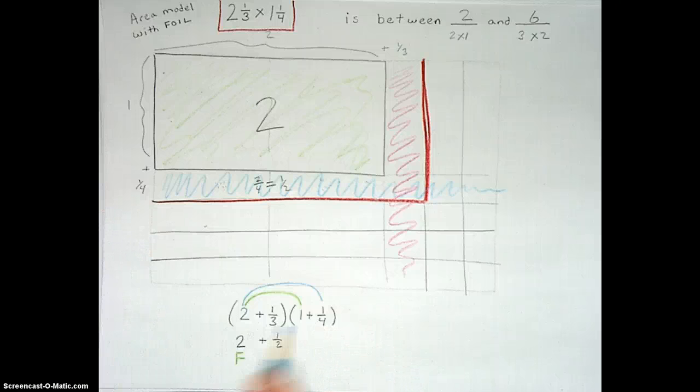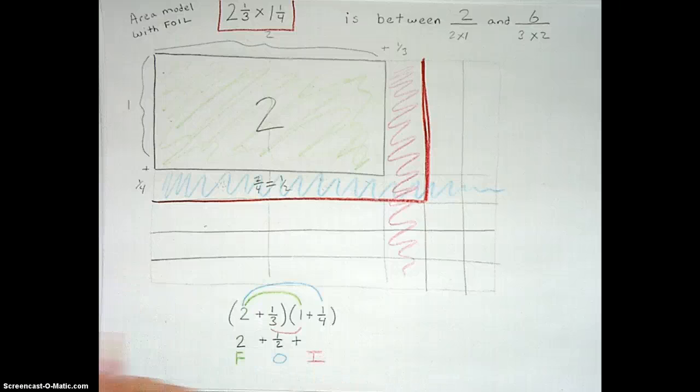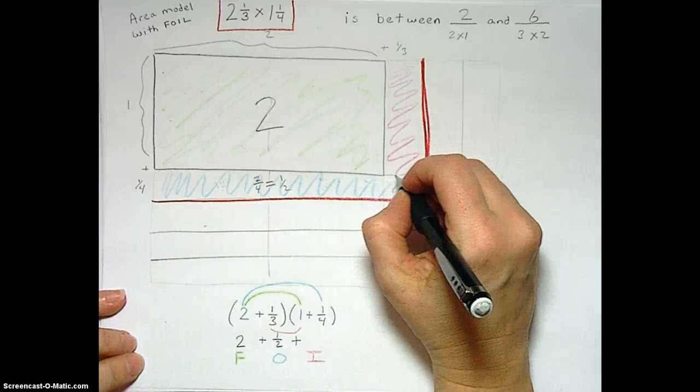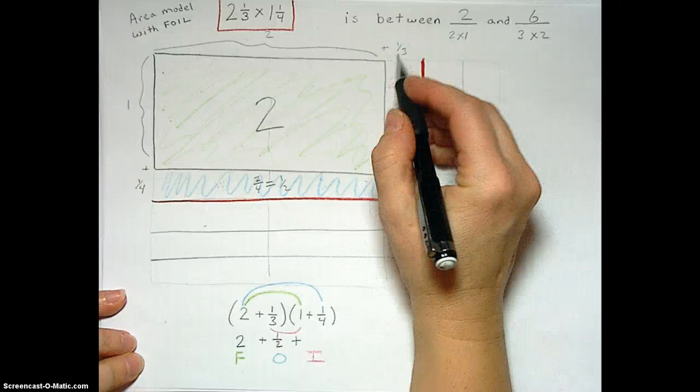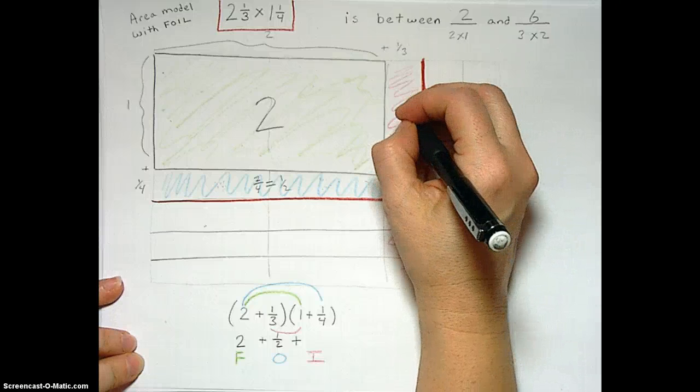That's the outer, plus inner, right here. The inner is 1/3 times 1, which is this piece right here that we see. It's 1/3 wide and just 1 tall. So this is our 1/3.